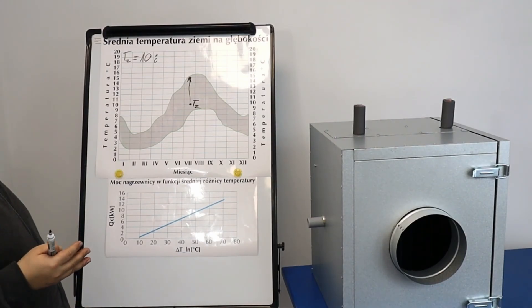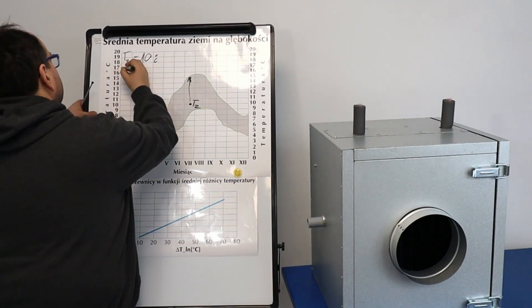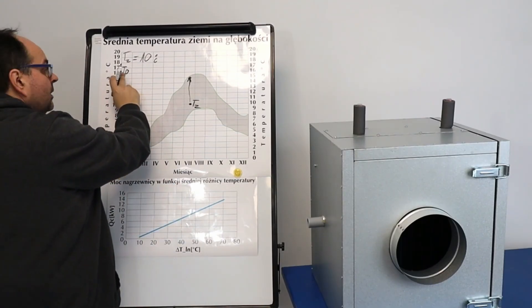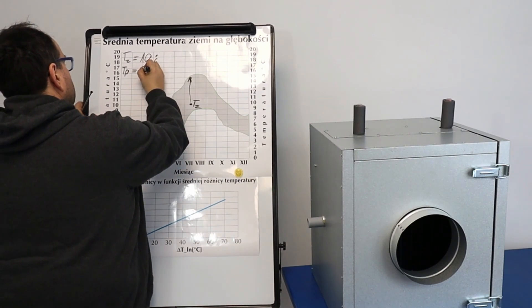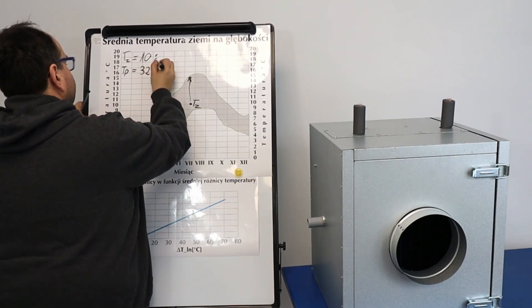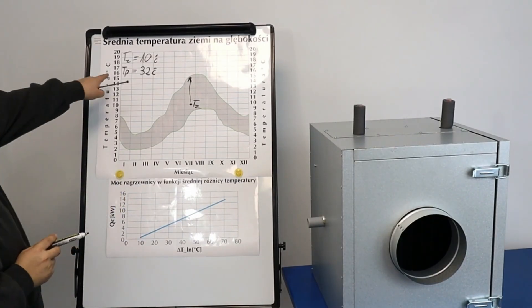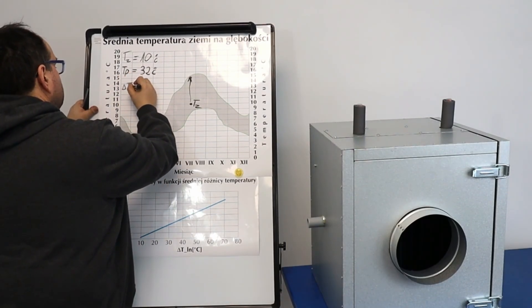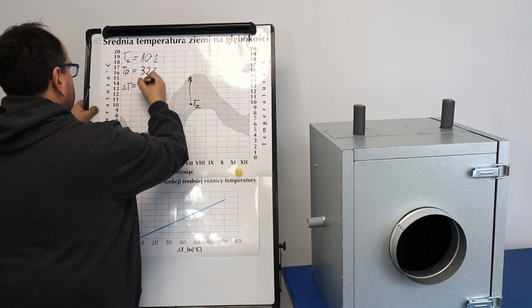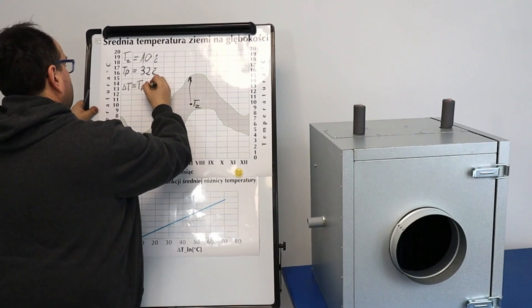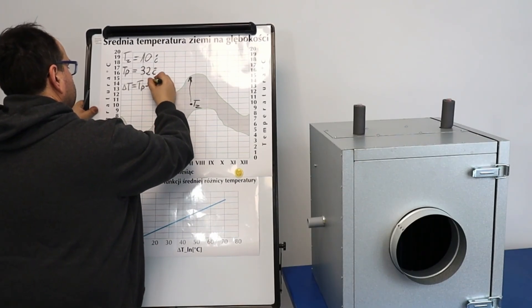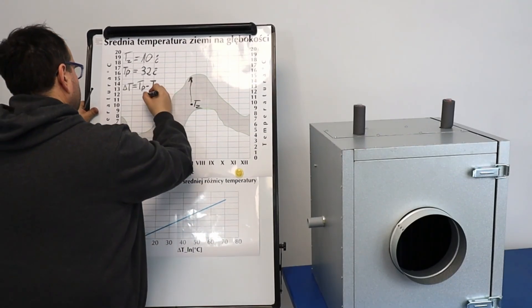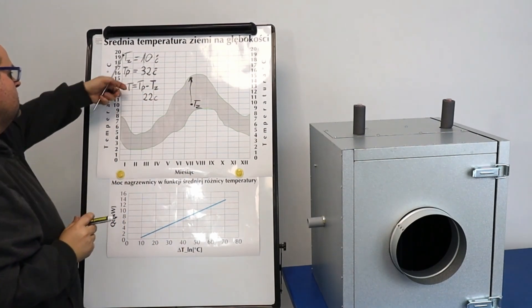The temperature in the summer, we assume, say, 32 degrees. TP air temperature and it's 32 degrees Celsius. And now, if we have something like this, we calculate delta T. It's the difference between these two temperatures. And this equals 22 degrees Celsius. We have 22 degrees Celsius.